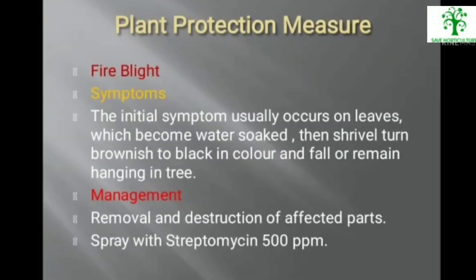Fire blight symptoms: initial symptoms usually occur on leaves, which become water-soaked, then shrivel and turn brownish to black in colour, falling or remaining hanging on the tree. Management includes removal and destruction of affected parts and spraying with streptomycin 500 ppm.